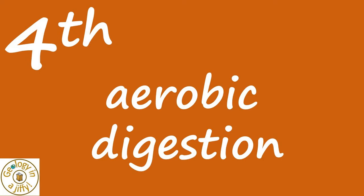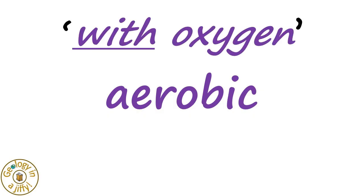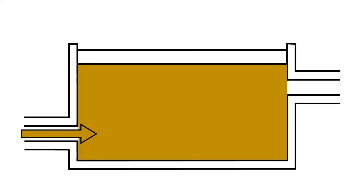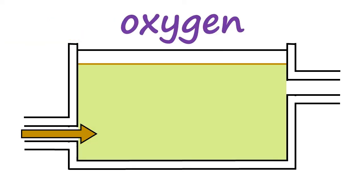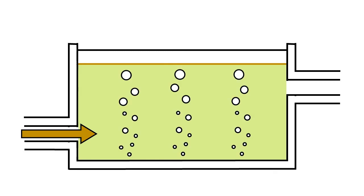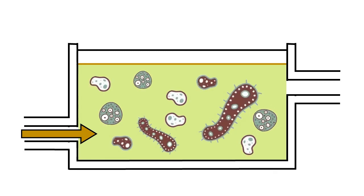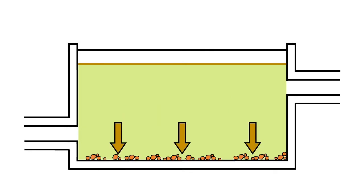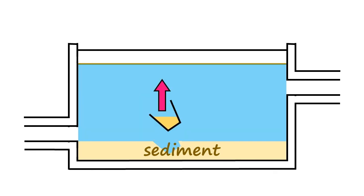The fourth stage is aerobic digestion. Aerobic means with oxygen, where oxygen-loving bacteria are added to do their work in a different area of the process. Liquid effluent is pumped in and the bacteria are added. Oxygen, or air, is bubbled up through the mixture, allowing the bacteria to thrive, breaking down and removing the remaining organic material and microbes, which then sink to the bottom, forming a layer of organic-rich sediment which can later be scooped out and used as a fertiliser.